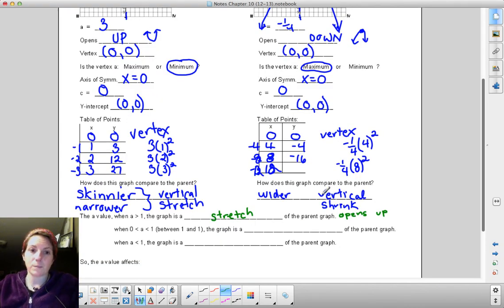So that brings us down here to the part where it asks us about how does this graph compare to the parent graph. And hopefully on this one where a value is 3, you notice that the graph was skinnier, or maybe you said narrower. We like to call that in algebra a vertical stretch because the graph is stretching away from the x-axis. And in the second problem where the a value was negative 1/4, I hope that you saw that the graph was wider. We like to call that a vertical shrink because the graph is getting closer to the x-axis.